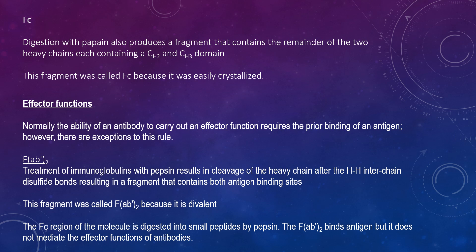Treatment of immunoglobulins with pepsin results in cleavage of the heavy chain after the H-H inter-chain disulfide bonds, producing a fragment that contains both antigen binding sites. This is known as F(ab')2 because it is divalent. The Fc region of the molecule is digested into small peptides by pepsin. The F(ab')2 fragment binds antigen but does not mediate the effector functions.